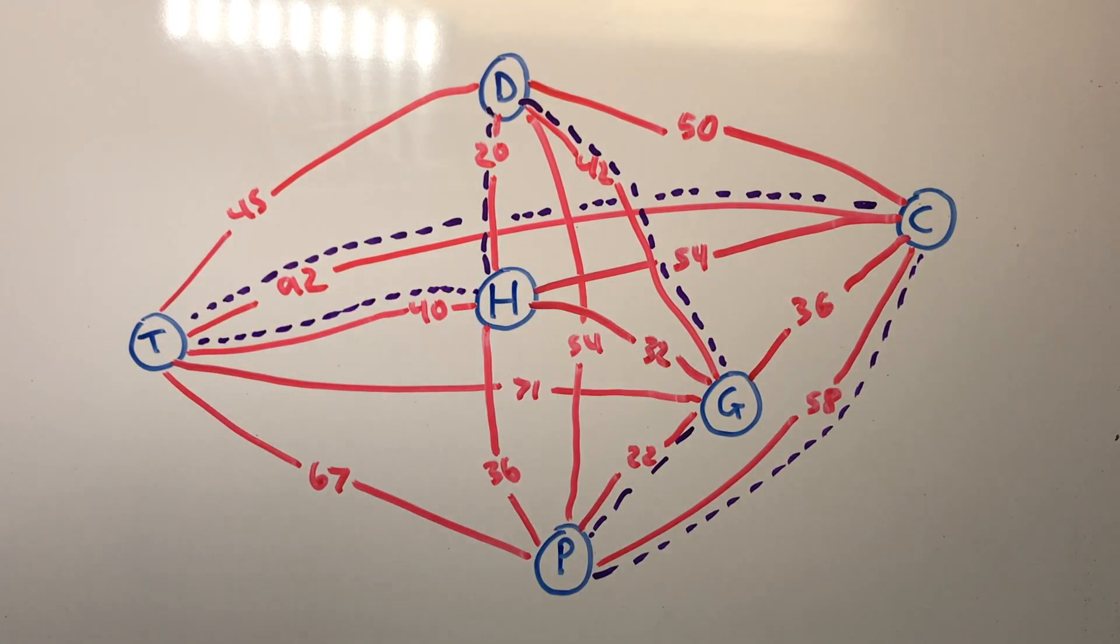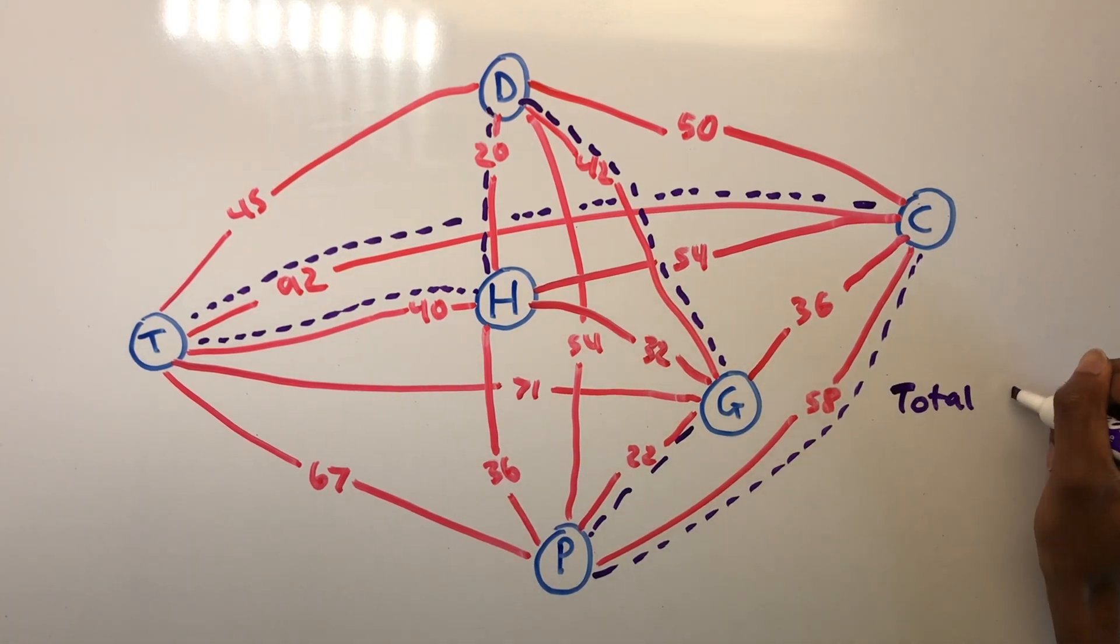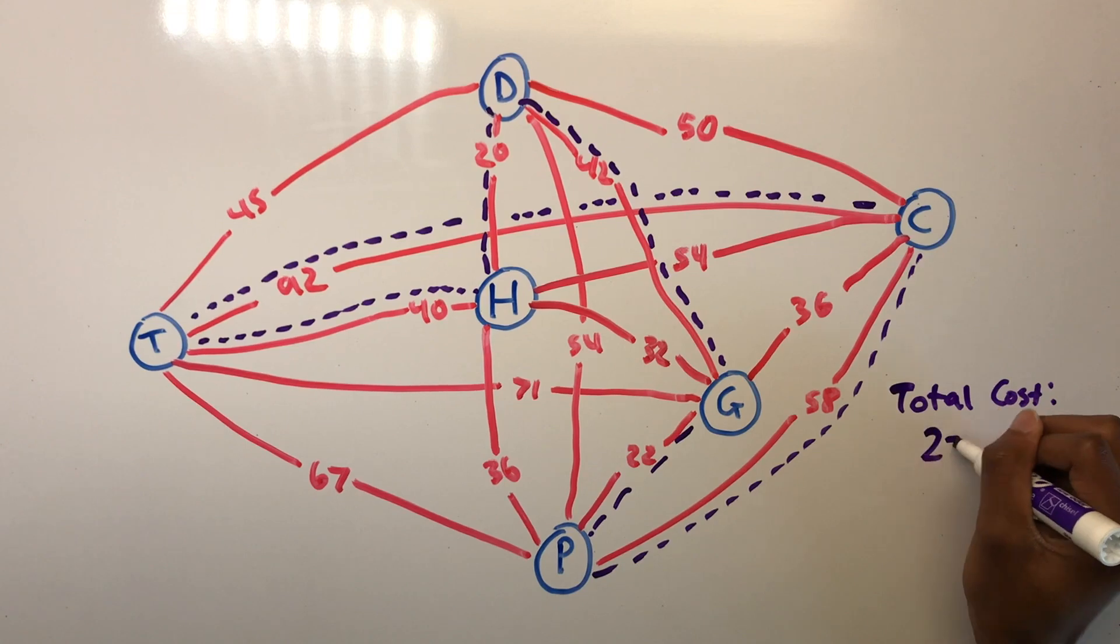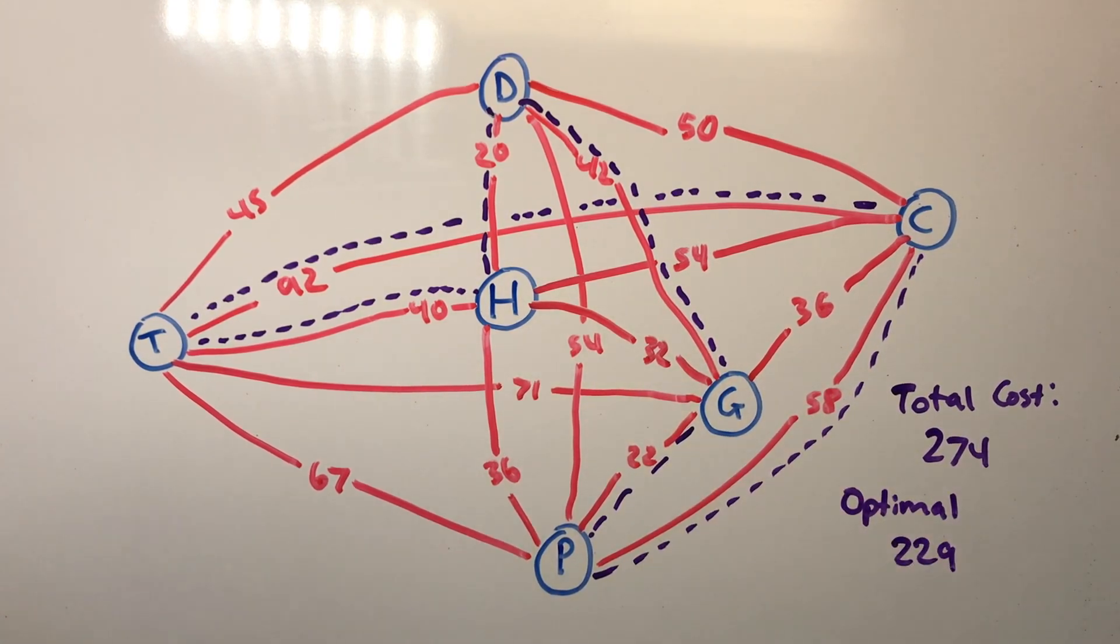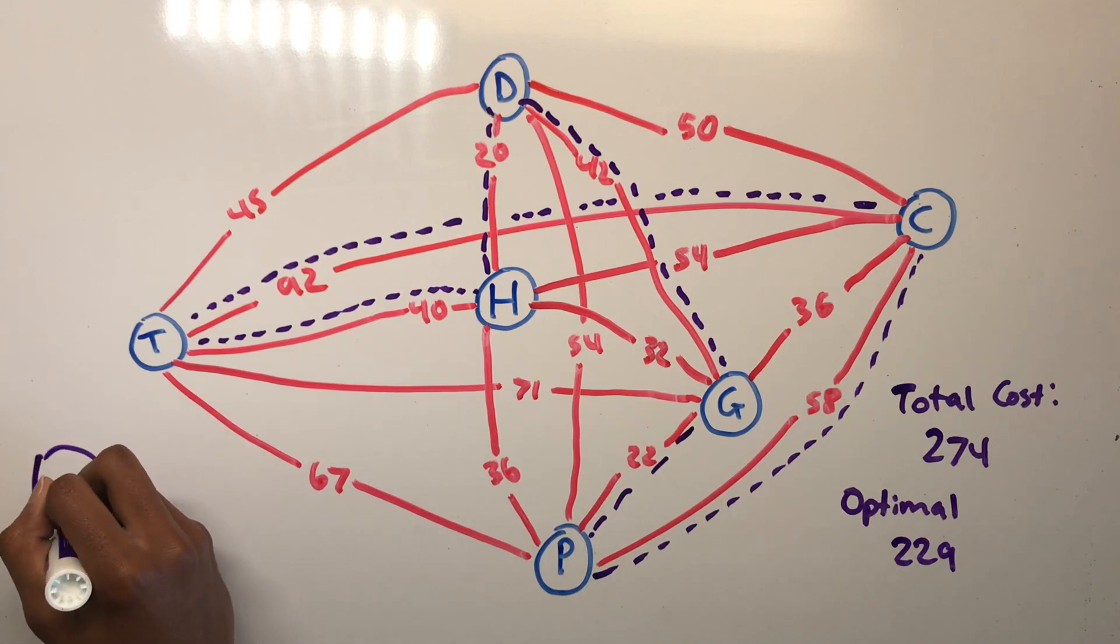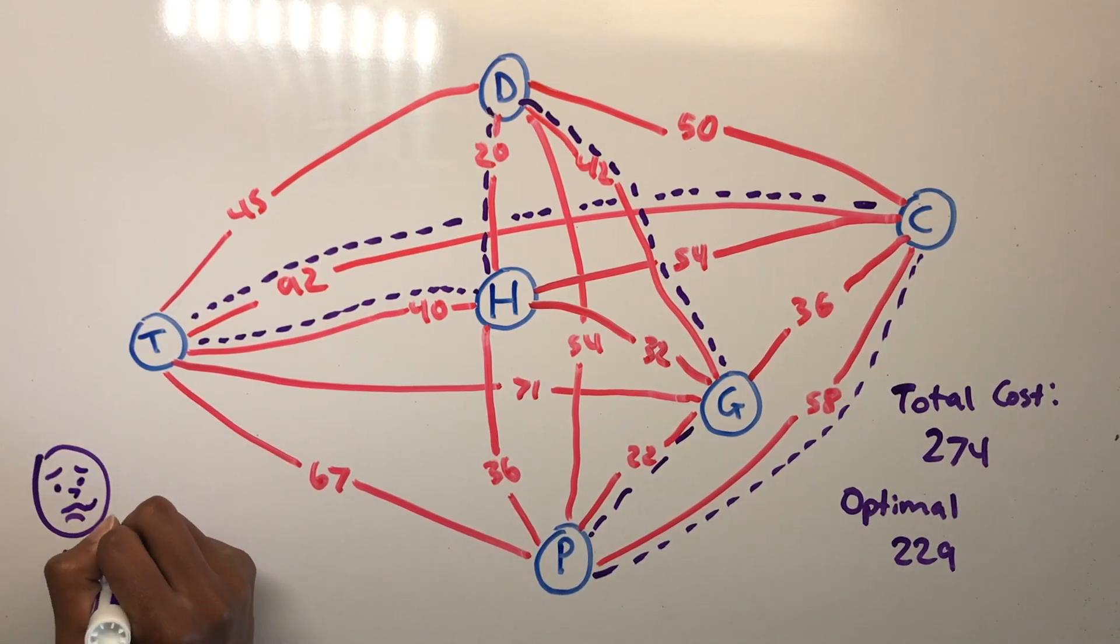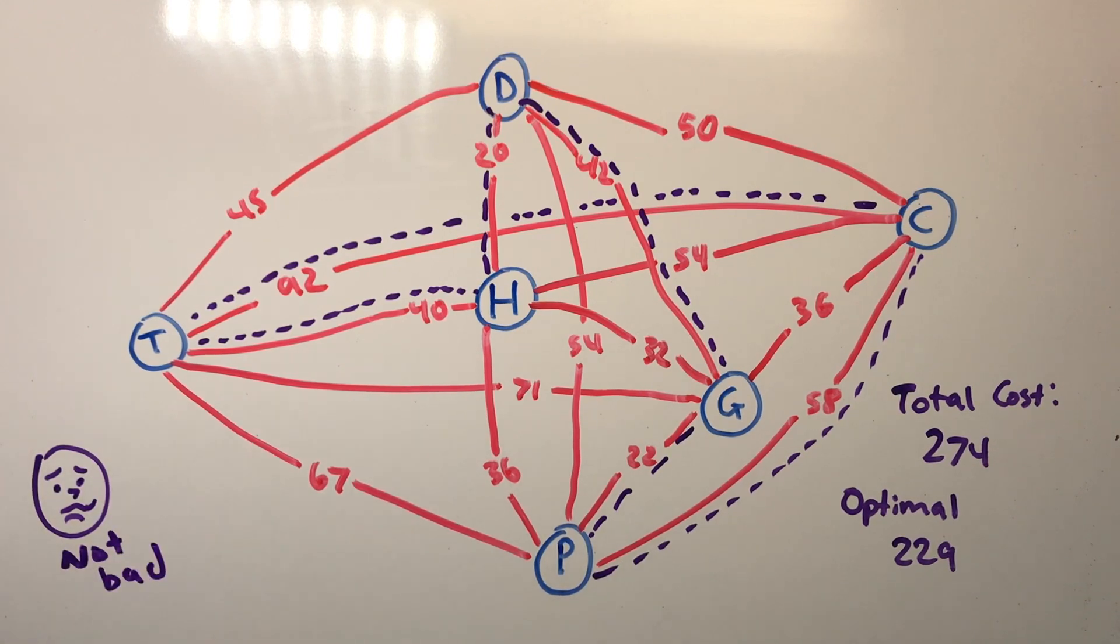This tour from H to D, to G, to P, to C, to T, and back to H, has a total cost of 274. The optimal solution has a cost of 229. So as you can see, the greedy algorithm yields a mediocre solution. It isn't as far off as some of the other paths, which total in the 200s and low 300s, but then again, it isn't optimal.